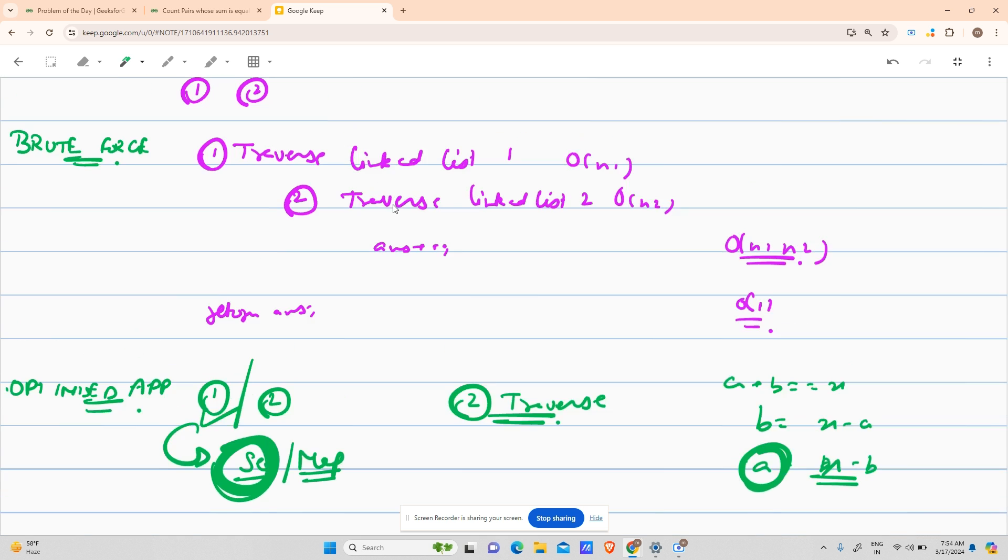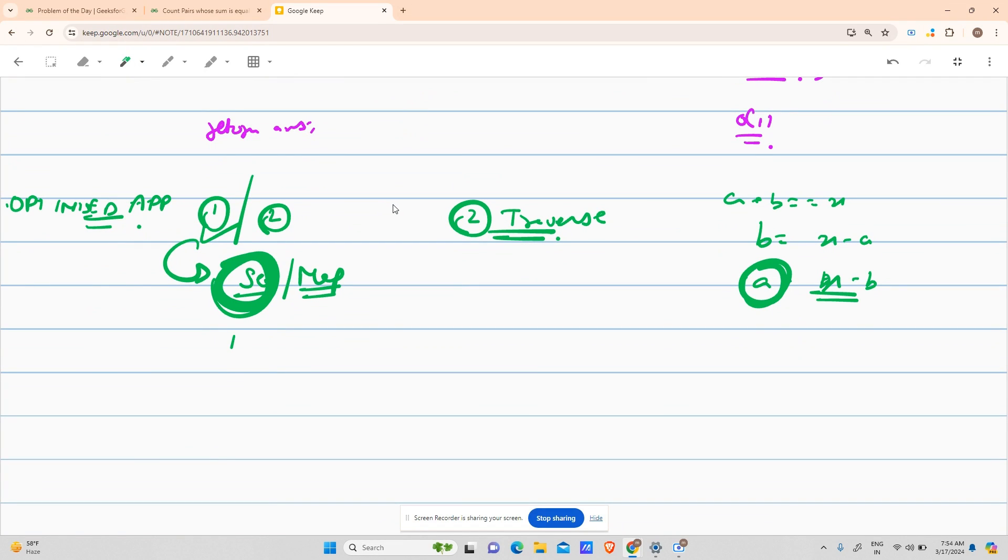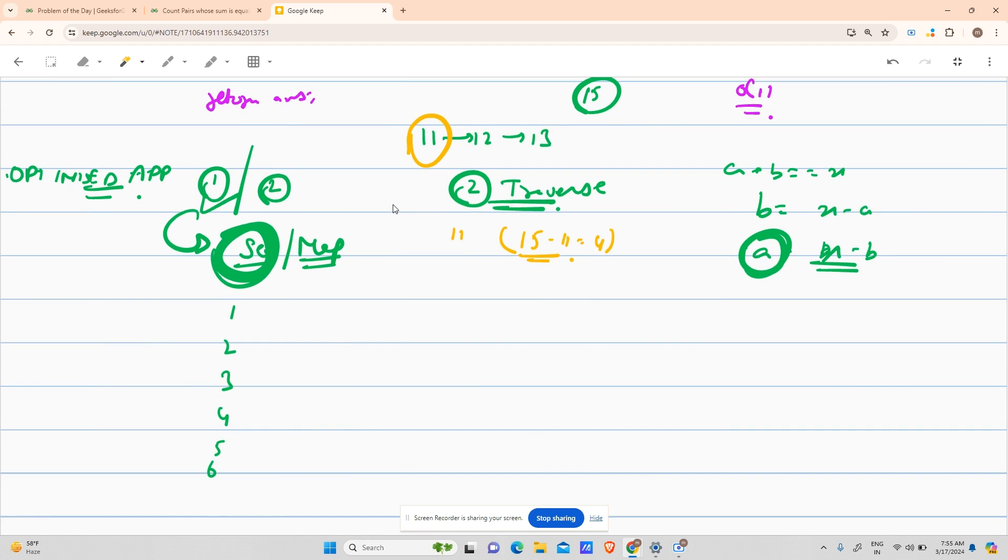Now because you wanted a plus b equals x, you have got b from the second list, so a will be equals to x minus b. So if somehow you find a in this data structure, your answer is got. For example, the data structure here, set will contain 1, 2, 3, 4, 5, 6, and your second linked list is 11, 12, 13. You have to find pairs for 15.